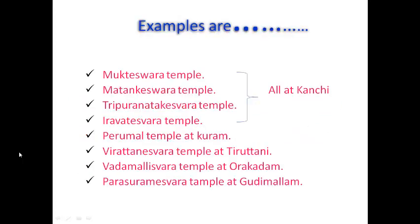The following are examples of the Nandivarman group: Mukteshvara Temple, Matangeshvara Temple, Thirupurantakeshvara Temple, and Airavateshvara Temple — all at Kanchi. Also: Perumal Temple at Kuram, Virataneshvara Temple at Thiruthani, Vadamallishvara Temple at Varagadam, and Parashurameshvara Temple at Gudimallam.